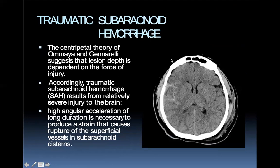Traumatic subarachnoid hemorrhage: the centripetal theory of Omaya suggests lesion depth is dependent on force of injury. Traumatic SAH results from relatively severe injury with high angular acceleration of long duration necessary to produce strain causing rupture of superficial vessels.